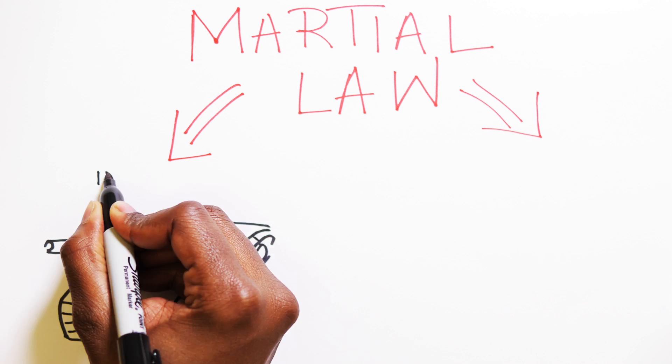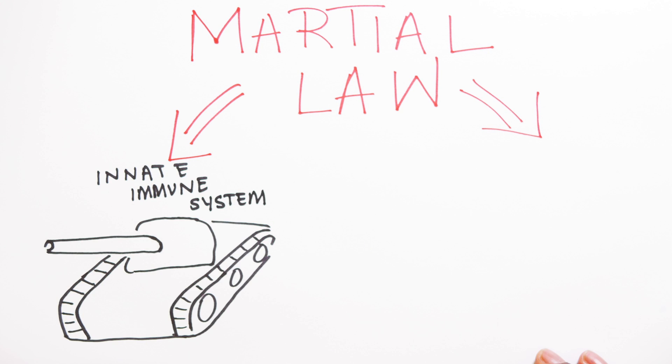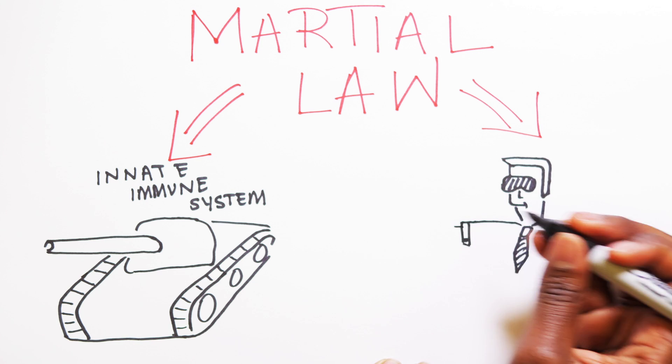Now you have two types of immune system. The innate immune system, which acts like a tank—it's non-specific, effective, but causes loads of collateral damage. This system is the key player in inflammation.